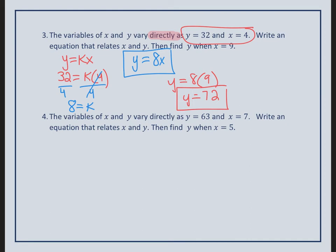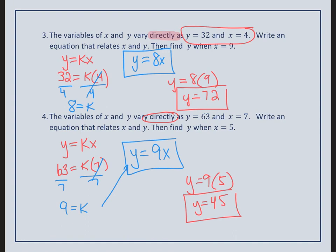Go ahead and pause this video and try number 4 on your own. Check how you did. We used the direct variation because of the word directly. When I plugged in the values, I got that k is equal to 9. So when I plugged the 9 into my equation, I have y equals 9x. And then it wanted us to find y when x equals 5. So 9 times 5 is 45.